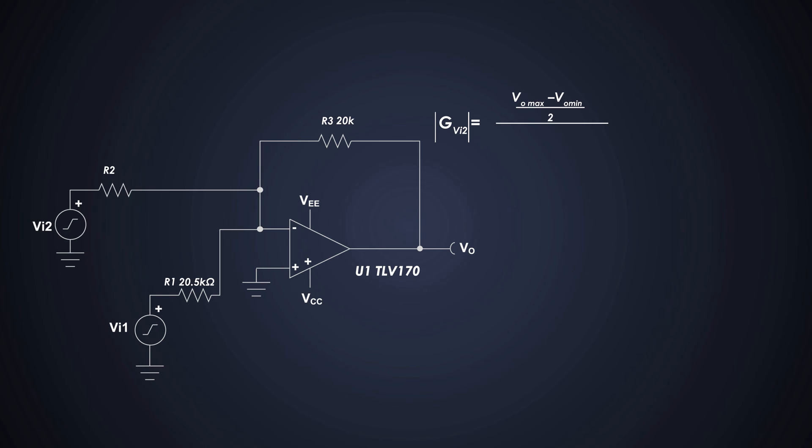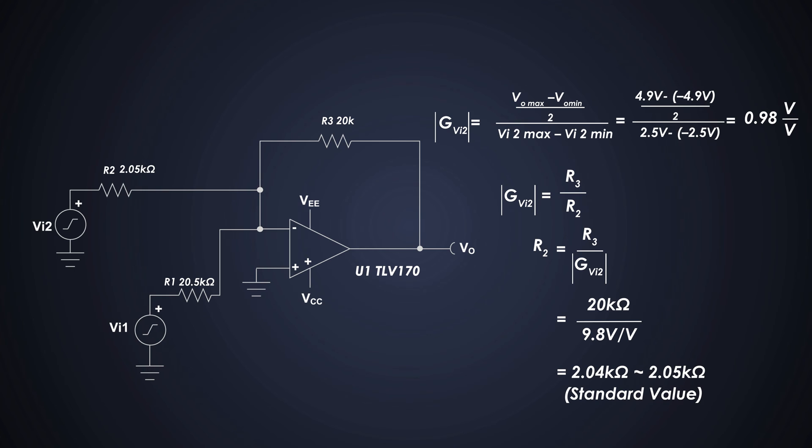Now using the same method, we can calculate the required gain of the second input stage using this equation. So, required gain would be 9.8V per volt. And required R2 would be 2.04k or 2.05k ohm resistance.